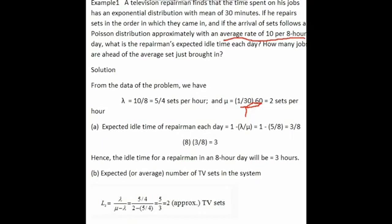The arrival rate lambda is equal to 10 by 8, which is equal to 5 by 4 sets per hour. So lambda is 5 by 4 and mu is 2. The traffic intensity rho equals lambda by mu, which is 5 by 4 divided by 2, giving 5 by 8. Therefore, the idle time probability is 1 minus 5 by 8, which equals 3 by 8.